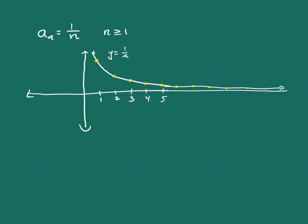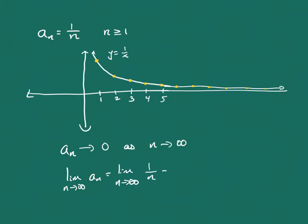In this case, our limit would be the same as the limit of the function. So as n goes off to infinity, our sequence a_n goes to 0. Another way of saying this is that the limit as n goes to infinity of 1/n is just 0. For all intents and purposes, this really does behave exactly as the limits of horizontal asymptotes of functions that we're already familiar with.